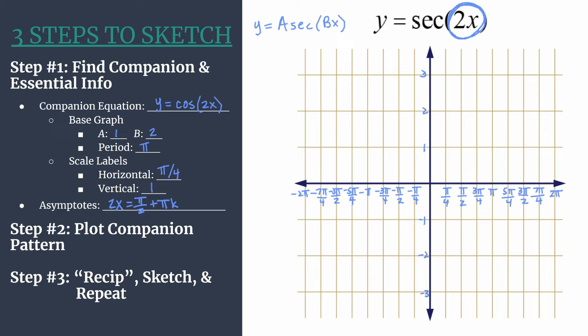So to get our asymptotes equation, we of course want to get x isolated, so we need to divide everything by 2. Dividing each term by 2, or multiplying by 1 half is another way to think about it. You can see our equation for the asymptotes of our final secant graph will be x equals π over 4 plus π over 2 k.